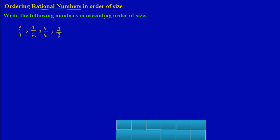Let's look at a typical exam question where we can be given a set of fractions and we're asked, as the instruction states, to write the following numbers in ascending order of size. Based on what we would have learned from previous videos, ascending means going from the smallest to the largest.